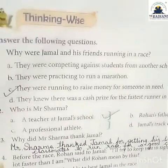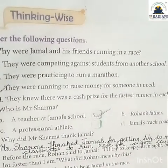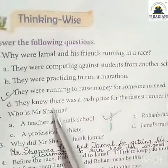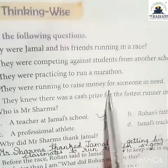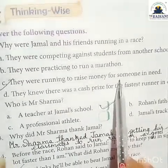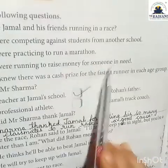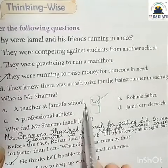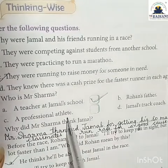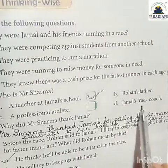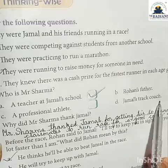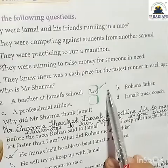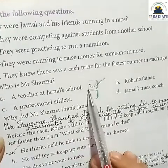Jamal and his friends took part in a running race competition to raise money for their teacher, Mr. Sharma, who had lost his home in a hurricane. Question two: Who is Mr. Sharma? The answer is option A — a teacher at Jamal's school.